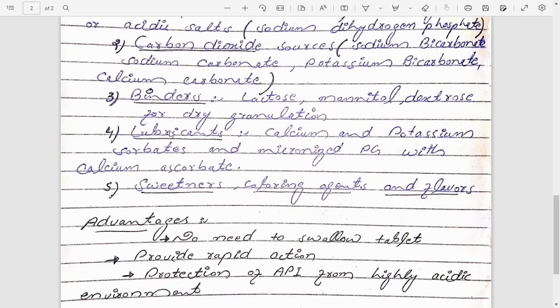mannitol, dextrose. These are the binders for granulation. We can also add lubricant, so in the lubricant we have calcium and potassium stearates and micronized propylene glycol with calcium ascorbate. We can also add sweeteners, sometimes we add sugar as a sweetener agent. We can also add coloring agent and we can also add flavoring agent.